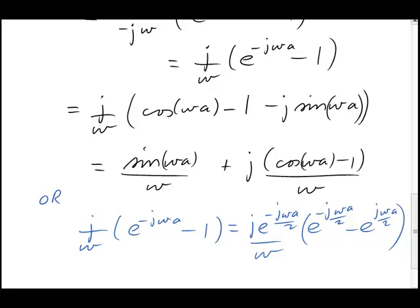The 1 over j times the thing in brackets here is almost the Euler result for sine of ωa over 2. All it needs is a half at the front, so I'm now going to put that half in and take it out again somewhere else.